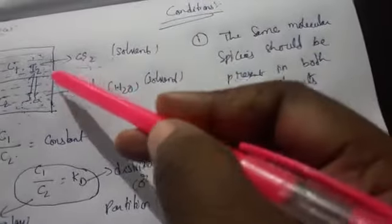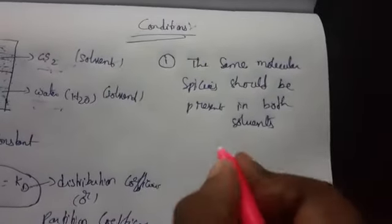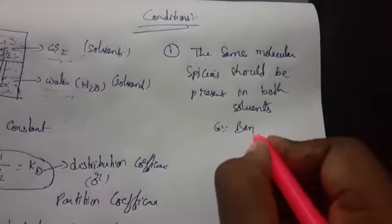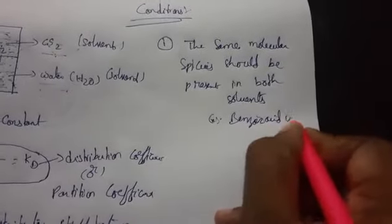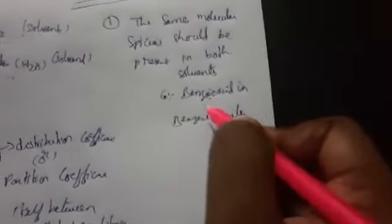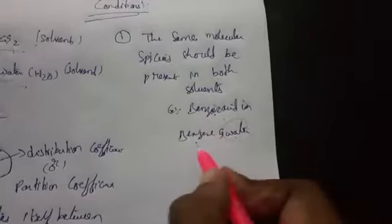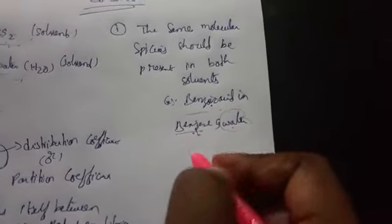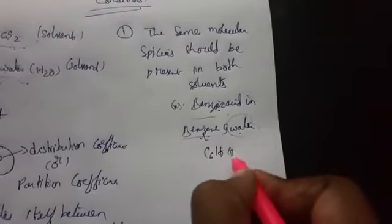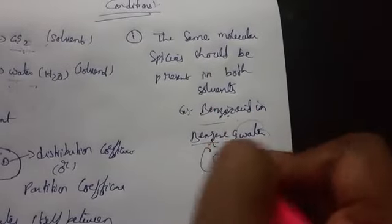The distribution law is only valid for the single molecule species, not for the total concentration of benzoic acid in benzene. Benzoic acid (C₆H₅COOH) forms a dimer in benzene, and this dimer will not obey the distribution law. Only the single molecular species obeys the distribution law. The second condition is that the temperature should always be kept constant.